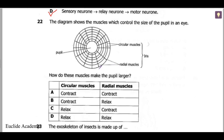Pause the video and look for the video on the eye which we did previously. Check what happens when the circular muscles contract and when the radial muscles contract. Watch that video then come back and see if you can answer this question.